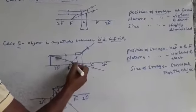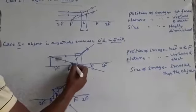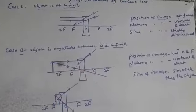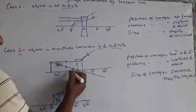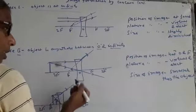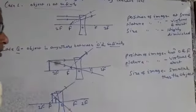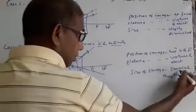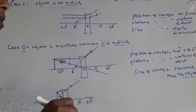So from here, a perpendicular is drawn above the principal axis. This is the image of the object. So position of image between optical center and focus. Nature you are seeing, virtual and erect. And size of the image is smaller than the object. That means you can also write diminished.